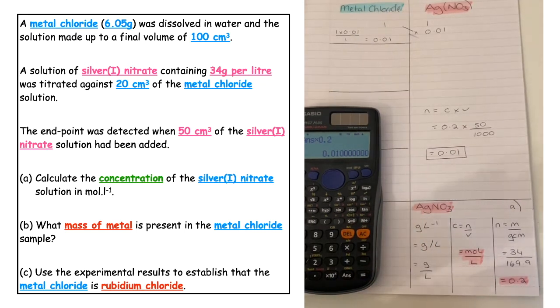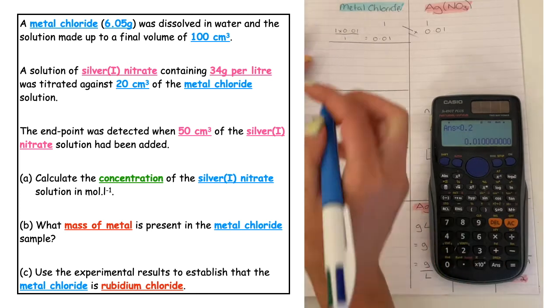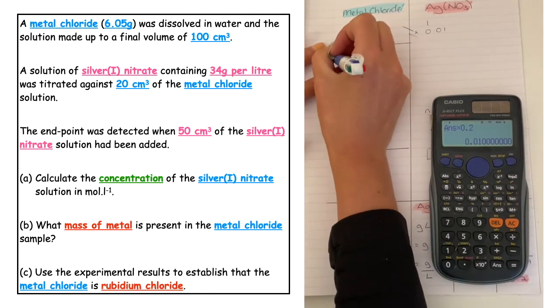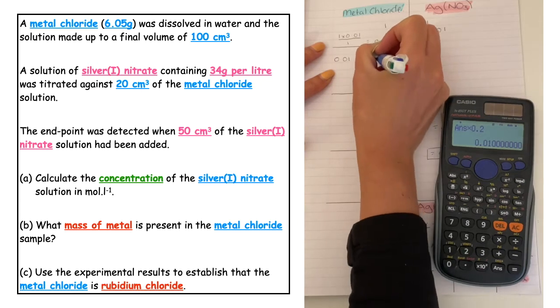If we read the numbers backwards, we've used the 50 centimetres cubed. The next piece of information we've been given is about the metal chloride. This number of moles was found in 20 centimetres cubed.